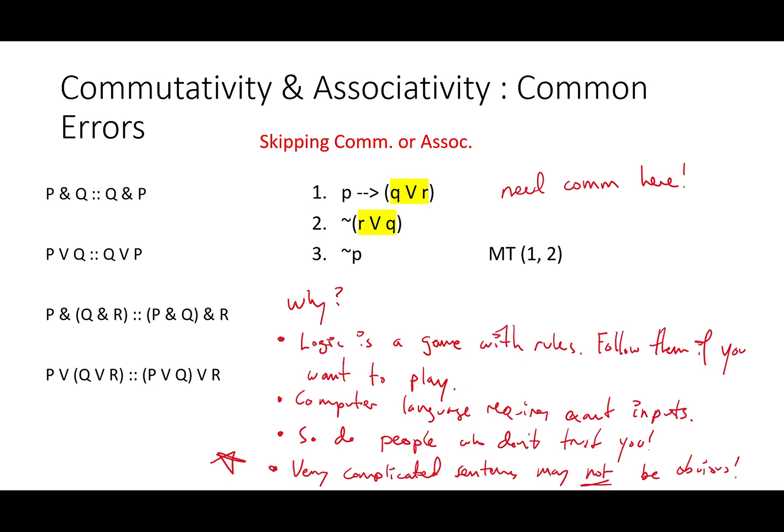First of all, logic is just a game with rules. Follow them if you want to play. Second, computer language requires perfectly exact inputs. And honestly, so do people who don't trust you. And those are what logic is for. Finally, if you have an extremely complicated sentence, it may not be obvious. In that way, commutativity and associativity can be logically relevant rules rather than just grammatical housecleaning.